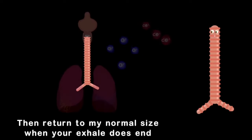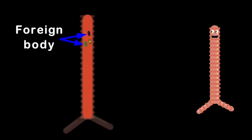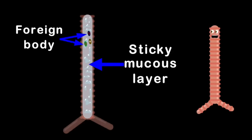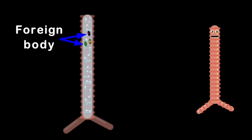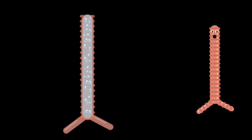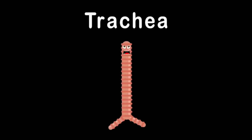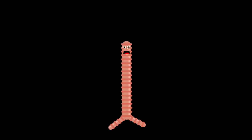When you inhale, I slightly widen and lengthen, then return to my normal size when your exhale does end. I even protect you from foreign bodies you can see, with a sticky mucus layer in the lining of me. When foreign substances are trapped, they're either excreted through phlegm or swallowed in the esophagus to your stomach within. I am your trachea, I'm about four to five inches long, an important part of you, so you'll learn in this song.